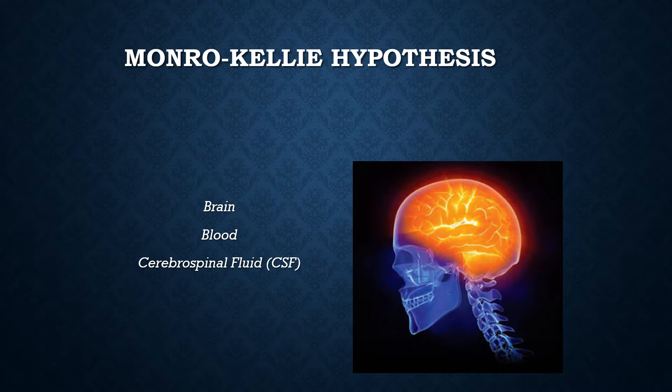Let's think of another example. Your patient has a head injury and the brain tissue becomes inflamed, so the volume of one of our three components — our brain — just increased. So now we have to look at the blood and the CSF. The cerebral veins will likely dilate, allowing more blood to leave the brain more efficiently. And the cerebral arteries may constrict to not allow as much blood to enter the brain. Again, the CSF may be displaced into the subarachnoid space as well.